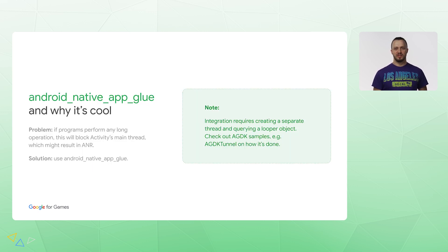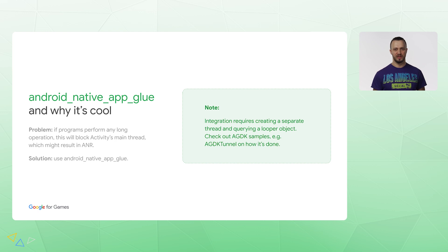A simple way of integrating GameActivity is just providing your callbacks and doing your processing in the same thread. A problem with this approach is some operations might take unexpectedly long time. In this case, the main activity thread will be blocked. An ANR may occur, which means the application will be killed by the OS. To help you avoid this, we provide an additional level of abstraction called Android Native App Glue. It works with an additional user-created thread, which it sends asynchronous messages to. We saw this technique significantly reducing ANR rate in games. Check out AGDK samples to learn more about App Glue integration.